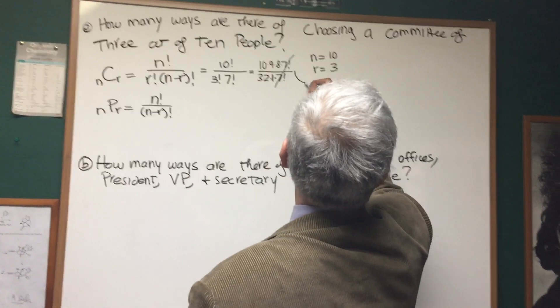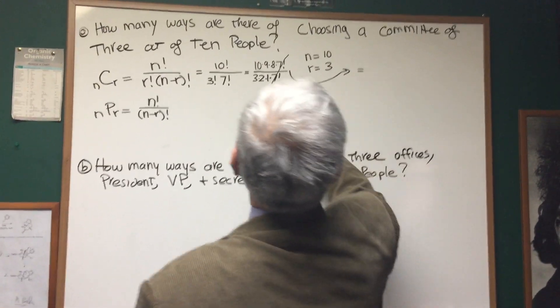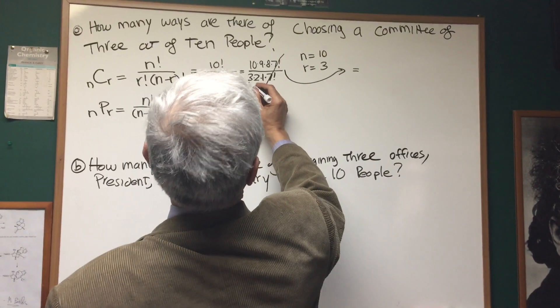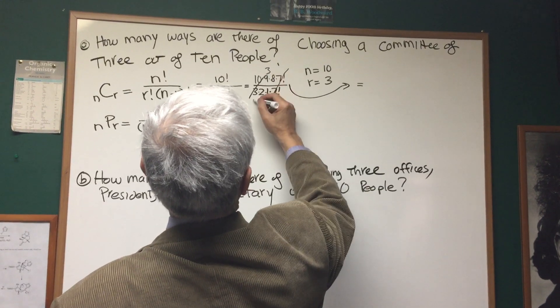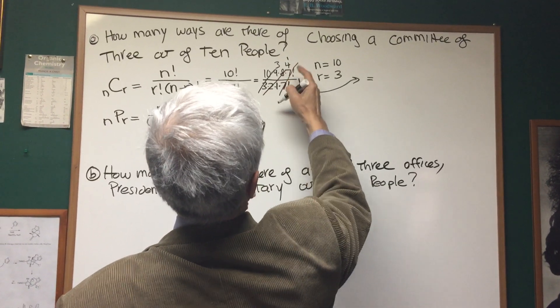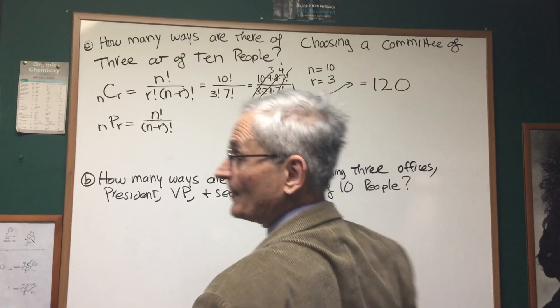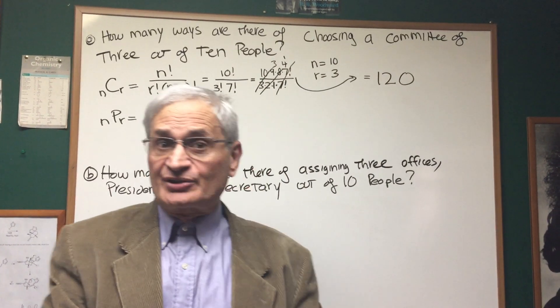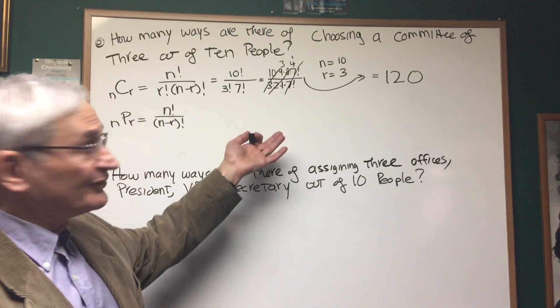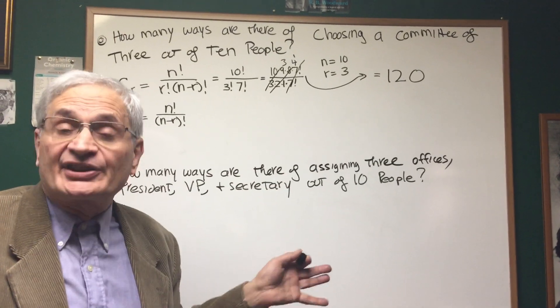Then we can, let's continue this over here. This is going to be what? Three times two is, let's see, three goes into nine three times. Two goes into eight four times. So we have four times three is twelve times ten is 120. So there are 120 ways of just choosing three people out of ten where order does not count. That's C, the C formula standing for combination.